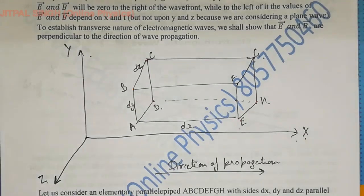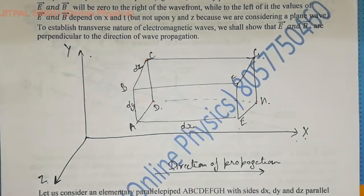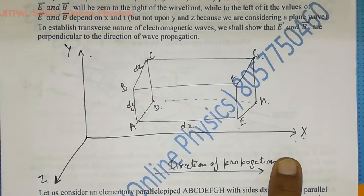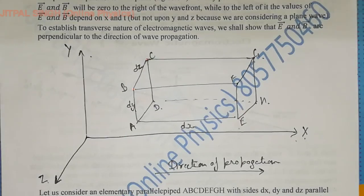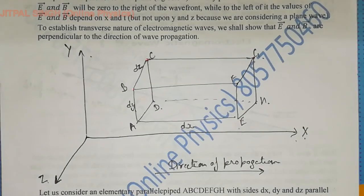Suppose we imagine that the electric field is along the x-axis. Initially, I will imagine that the electric field is along the x-axis and the wave is also propagating along the x-axis — that means in the direction of propagation. In the end, I will prove that if the electric field is along the x-axis, then the electromagnetic wave will not be produced. So we call this the contradiction method.